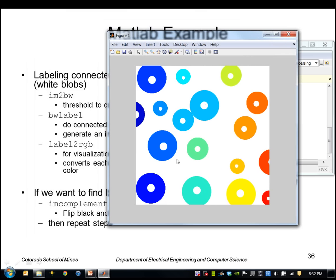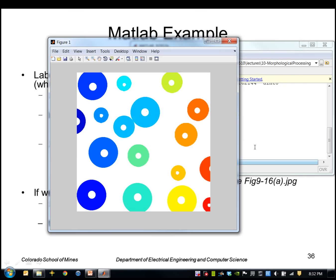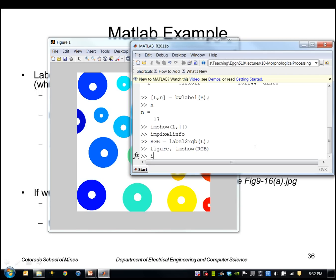If I wanted to find the black regions instead of the white regions, I could do that by using, I could basically flip the image. I could complement it.